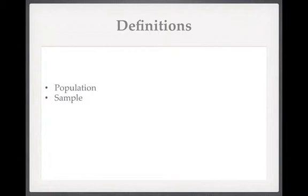In theory you could form that subgroup in any way — people with anal fissure who are more than five foot six tall, or people you stop at random on the street and ask if they have anal fissure. These would all be ways of forming a sample, but they wouldn't be representative samples. A representative sample is one whose characteristics accurately represent the characteristics of the patient population.